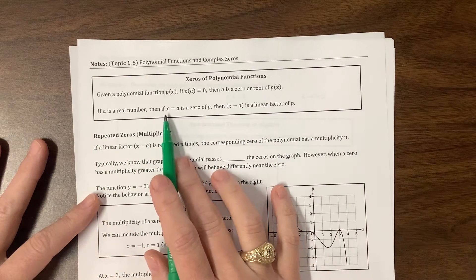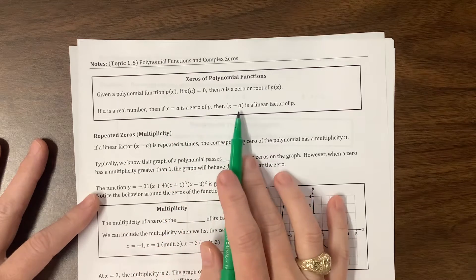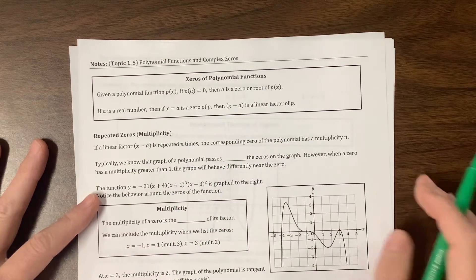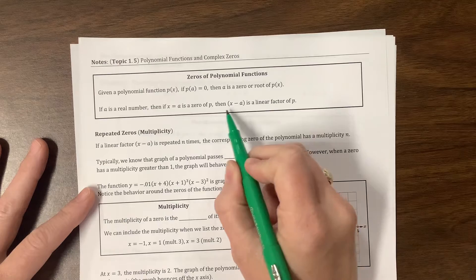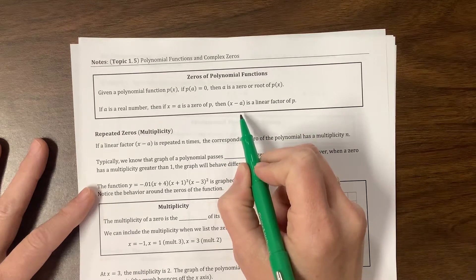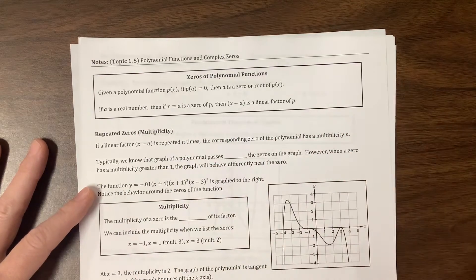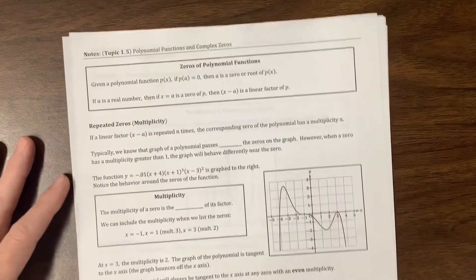Or if x equals a is a 0, then x minus a is a linear factor. So factors would be x minus whatever, and then zeros would just be that value. I think that'll make sense as we keep going.